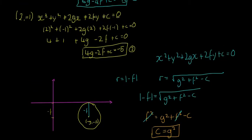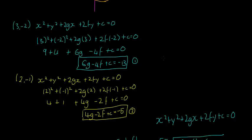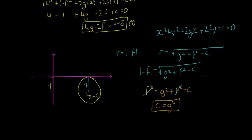So that's the key trick to this question. Getting the first two equations from the points is something we've done before — substituting (3, −2) and (2, −1). The tricky bit is this: since the center is −f down the y-axis, the radius equals |−f|, and also equals √(g² + f² − c). You equate them, square both sides, and you end up with c = g². That's equation 3.